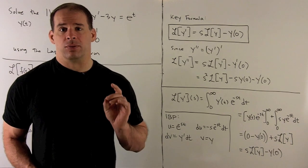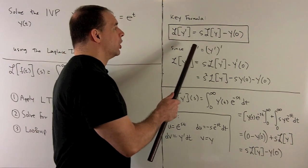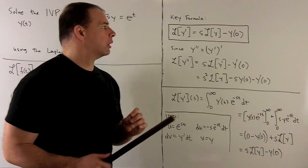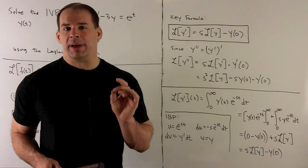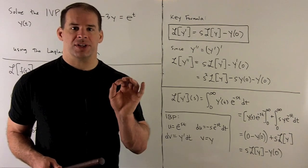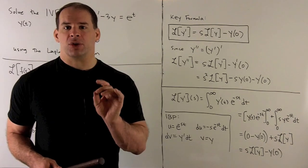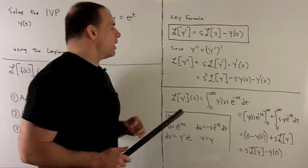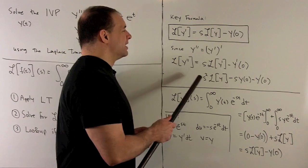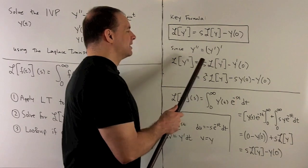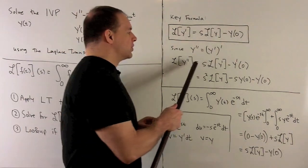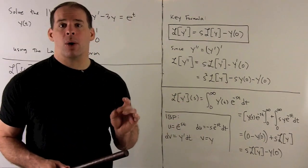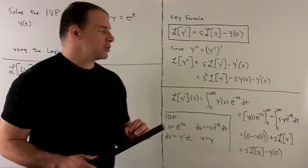The key formula driving our process: the Laplace transform of a derivative equals s times the Laplace transform of the original function minus the original function evaluated at 0. For the second derivative — which is the derivative of the first derivative — applying the formula twice gives s squared times L{y} minus s·y(0) minus y'(0). We'll need this for later.